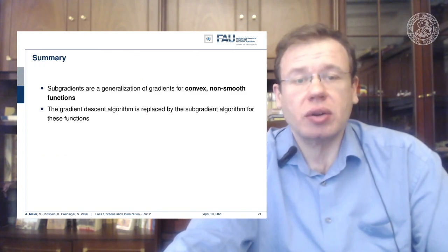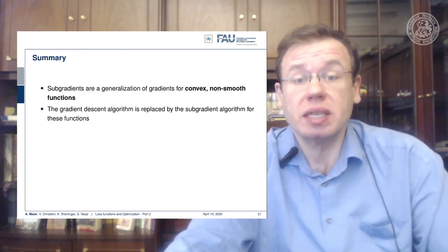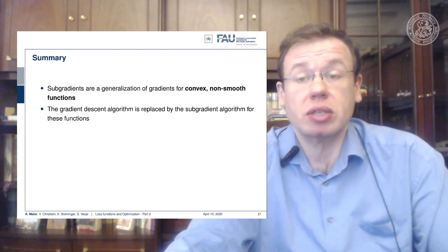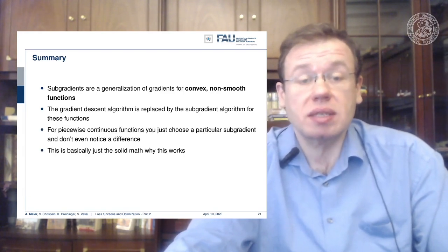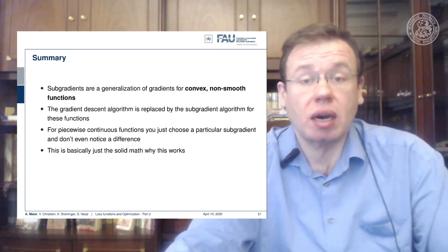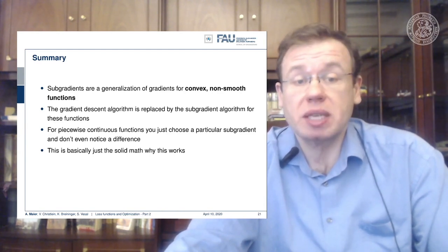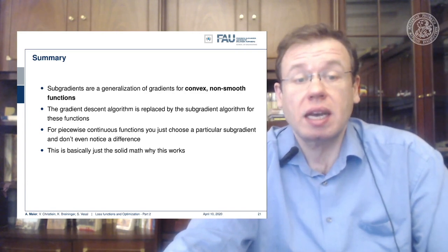Subgradients are a generalization of gradients for convex non-smooth functions, and the gradient descent algorithm is replaced by the subgradient algorithm for these functions. Still, this allows us to continue essentially how we did all of the time. For piecewise continuous functions, you just choose a particular subgradient and you probably don't even notice a difference.